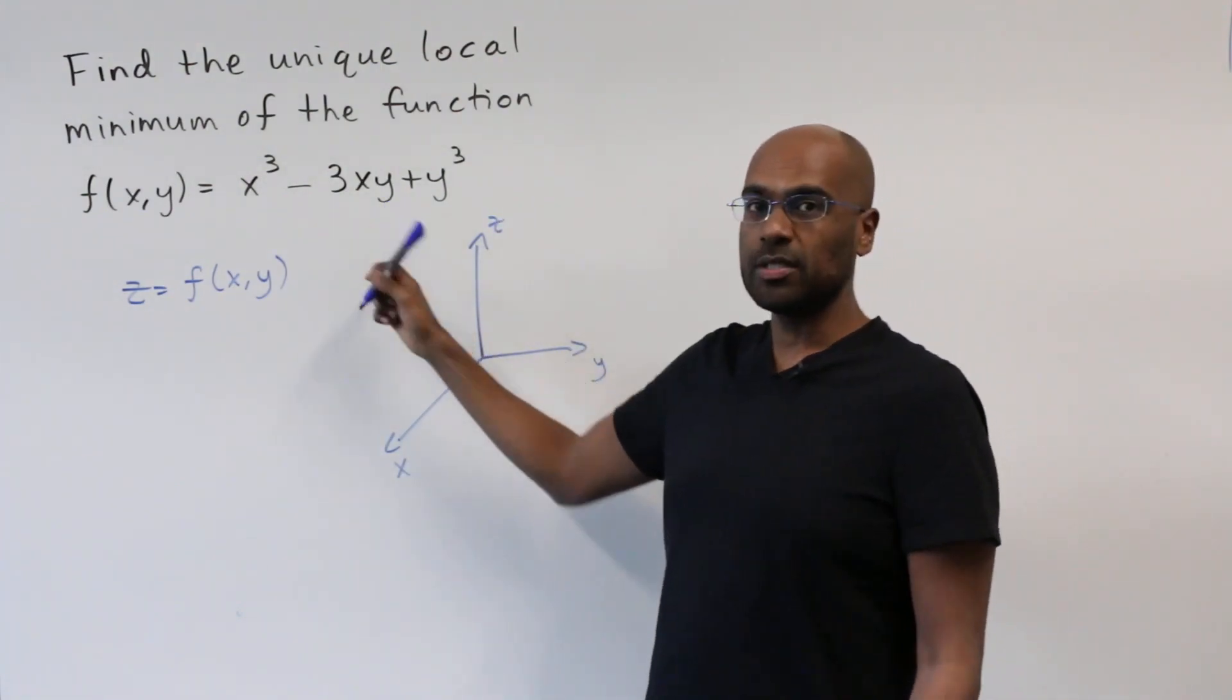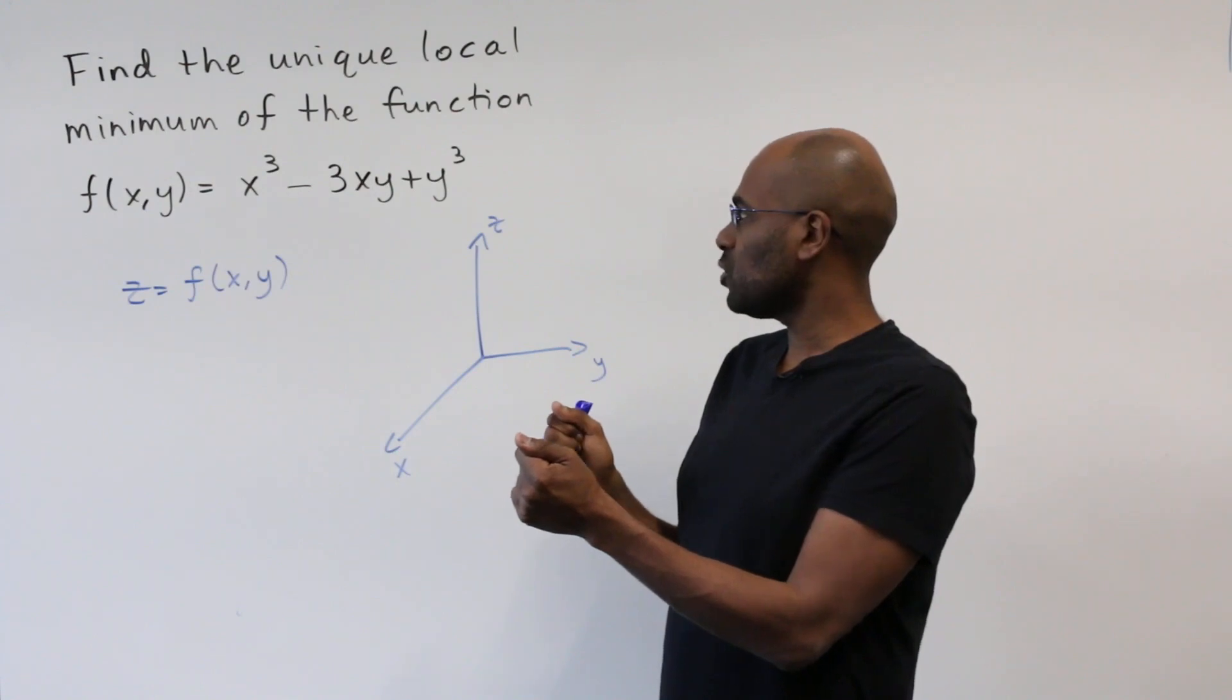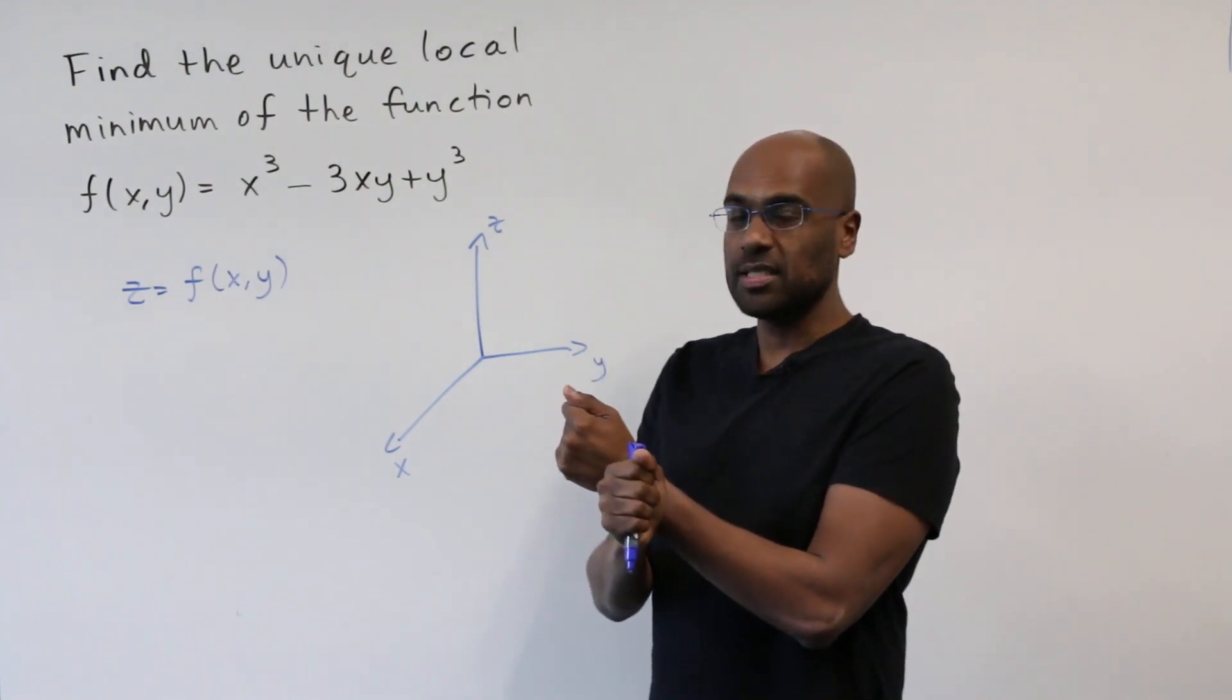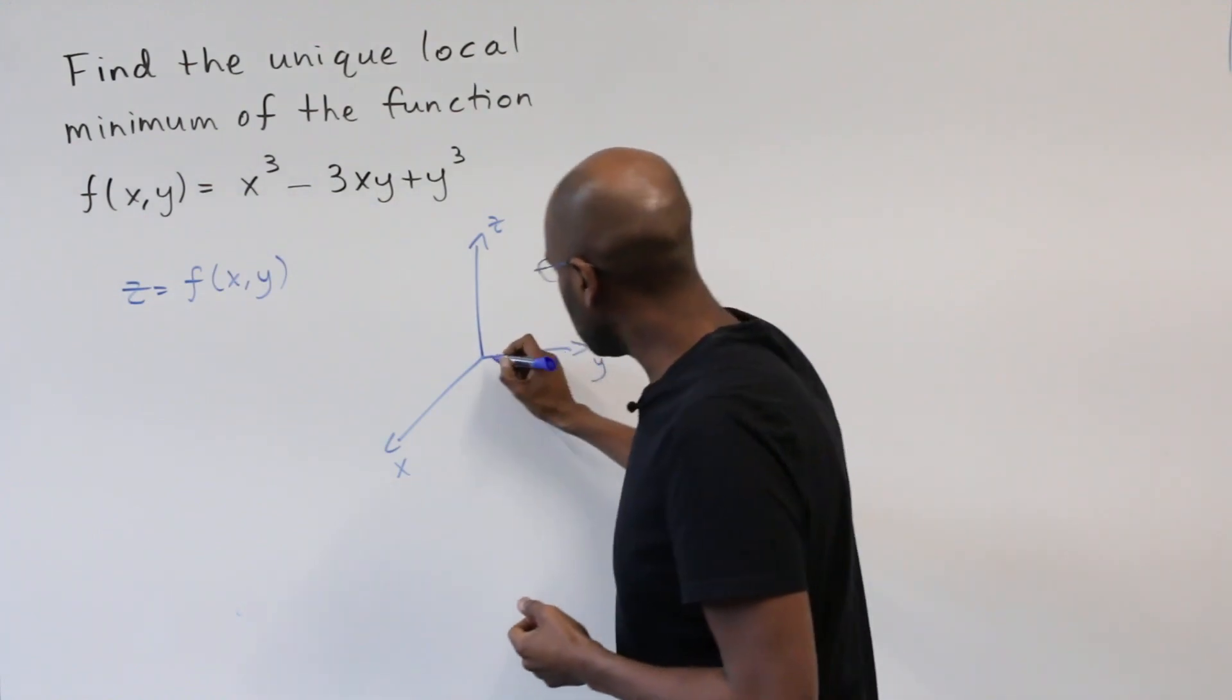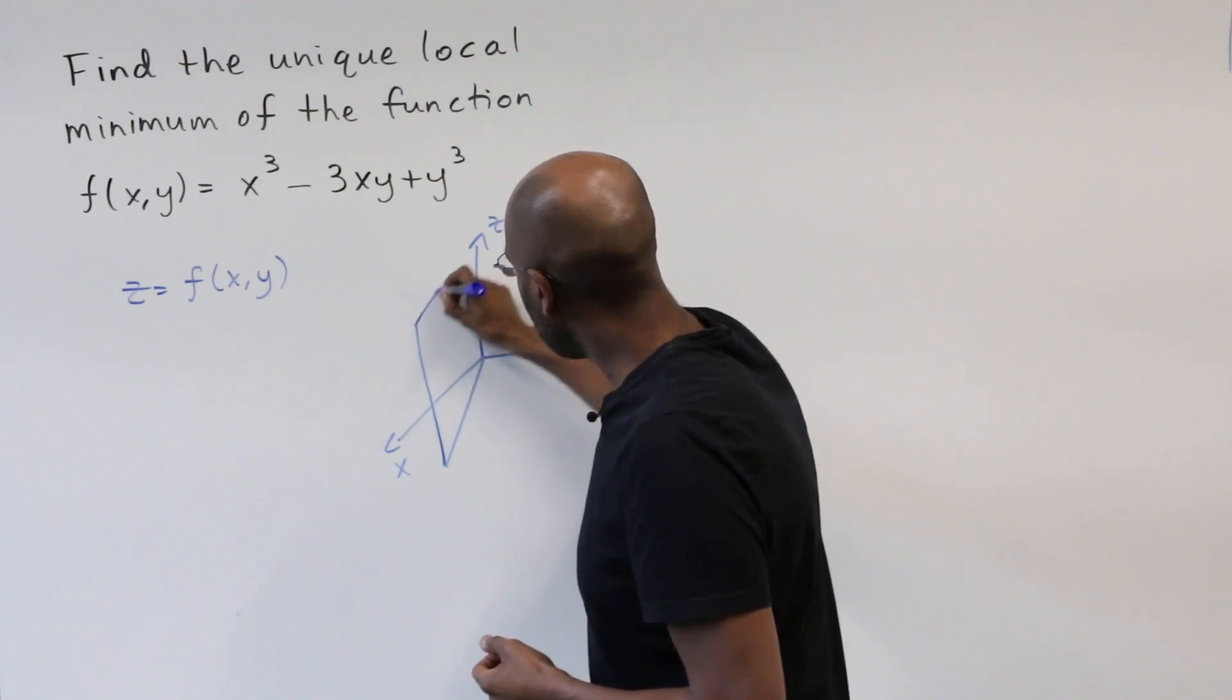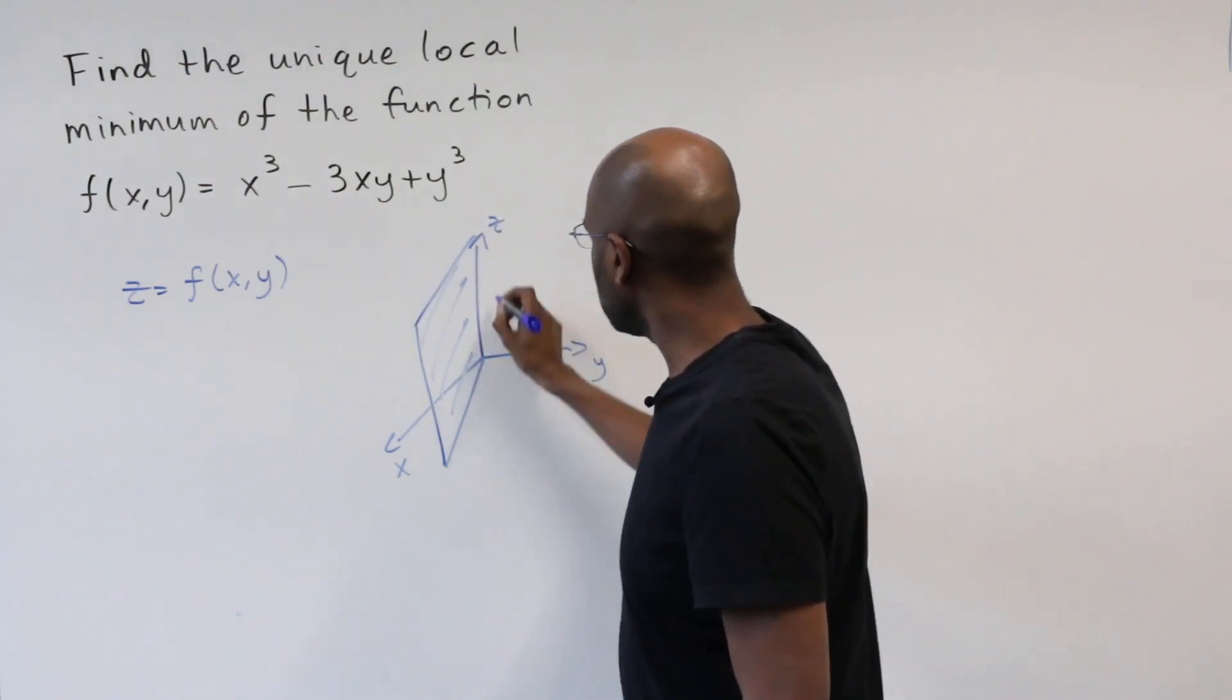If you look at this function and interchange the roles of the variables x and y, you'll notice that the function stays the same. That means that this function, when graphed, has symmetry about the plane x equals y.